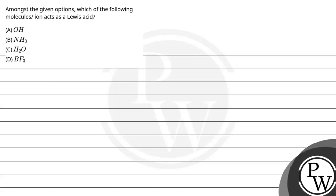Let's read the question. The question says: amongst the given options, which of the following molecules or ions act as a Lewis acid? Option A is OH negative, B is NH3, C is water, and D is BF3.